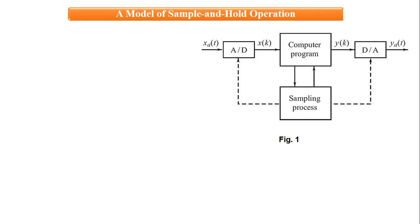As discussed many times, in digital control the signal is processed digitally — a part of the loop is digital. The analog signal obtained from measuring devices or feedback devices like sensors and transducers is given to an A-to-D converter, which converts the signal into a sampled signal. It is then processed by the computer according to the logic fed into the program. The computer yields a discrete signal, which is then converted back to analog using a D-to-A converter.